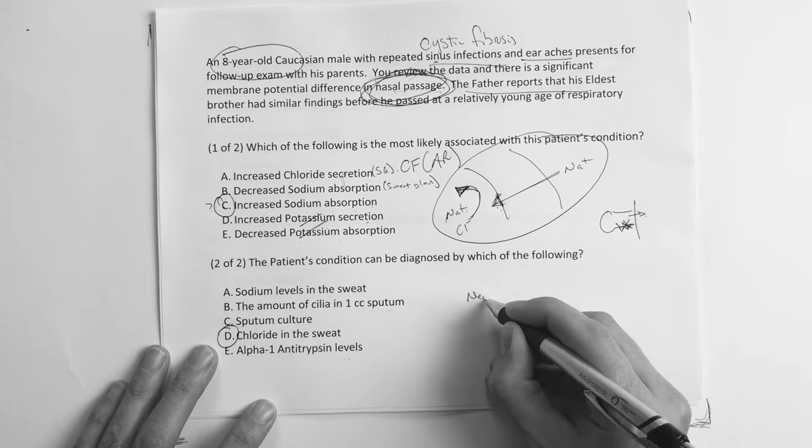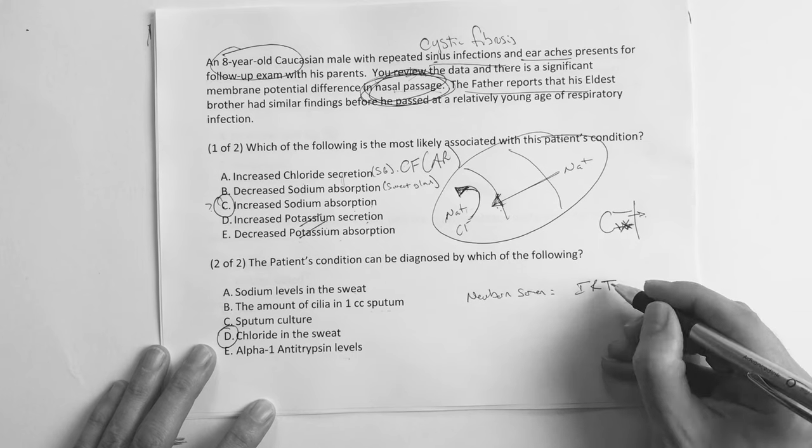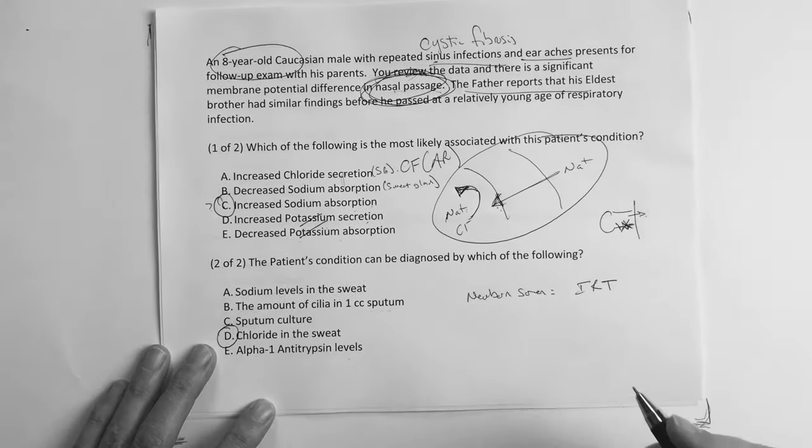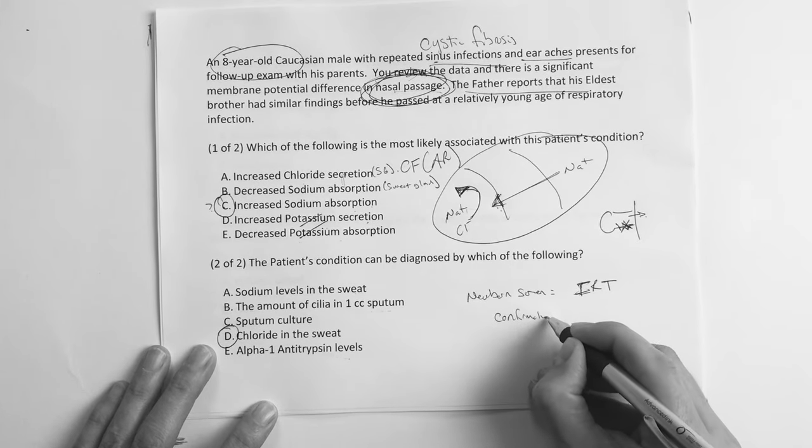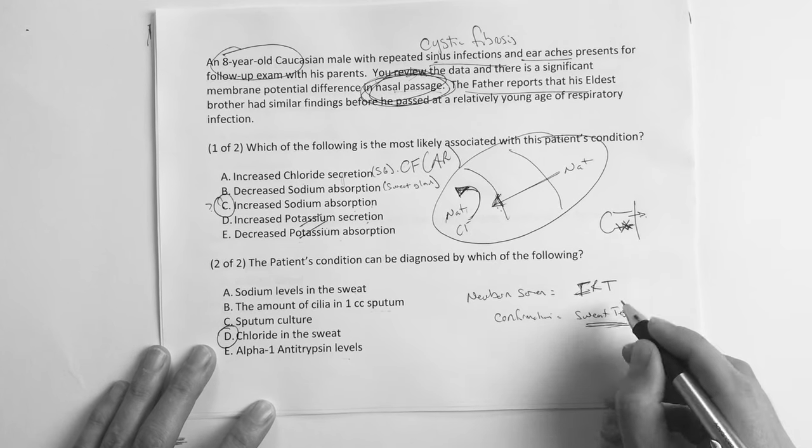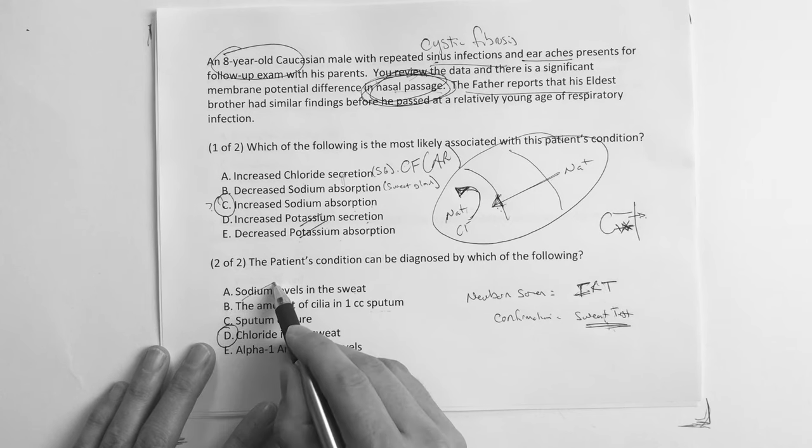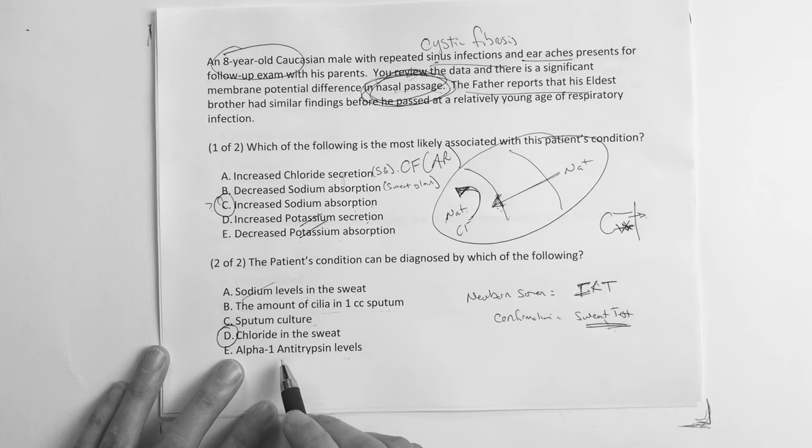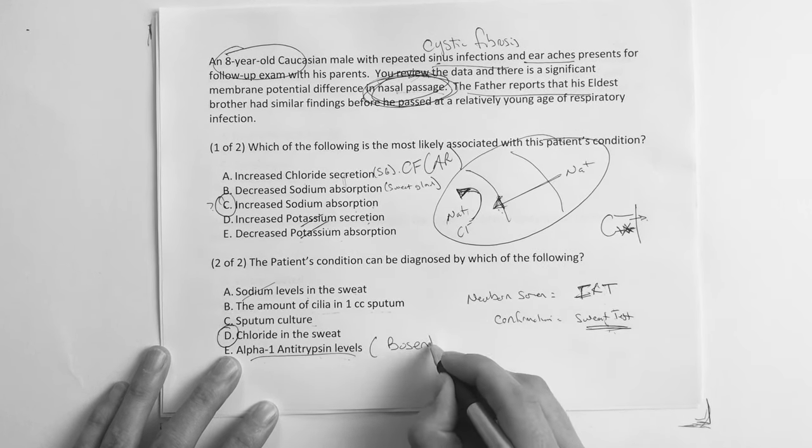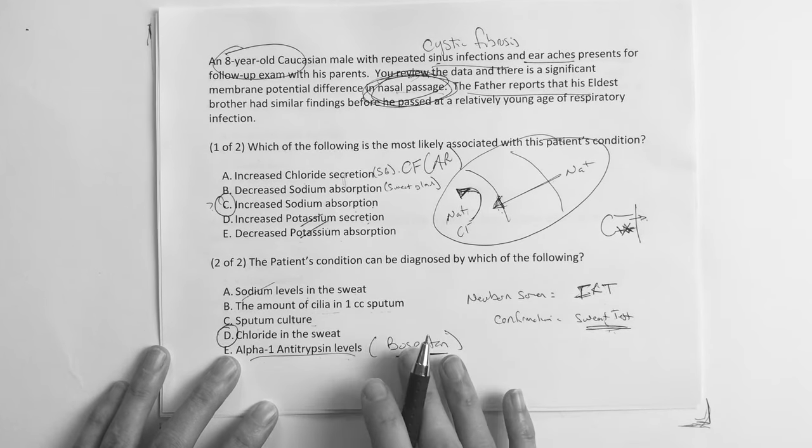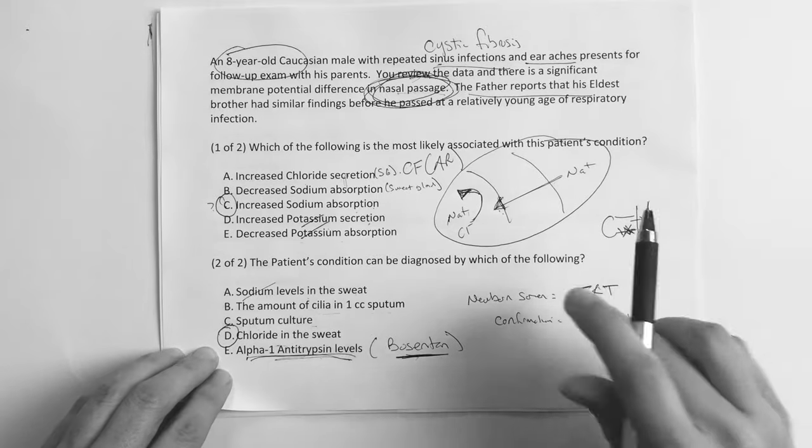Now really what they kind of do on this, on the newborn screen, they do this, they call it I think it's an IRT test, immunoreactivity, trypsinogen, immunoreactive trypsinogen. It's an IRT and then it's basically to get a confirmation with the sweat test. But when you start getting all this test stuff, it's fair game for Step 1 but it's more of a Step 2, Step 3 kind of concept. So this is just a distractor. Sodium levels, no, it's more of the chloride. Cilia, I just made that up. Sputum culture, no. Alpha-1 antitrypsin level, you know the one thing you better know with this is mainly the medication because it always shows up on those exams, bosentan, competitive antagonist, endothelial receptors. That's associated with this alpha-1 antitrypsin condition. But anyways, the answer to this one is chloride in the sweat.